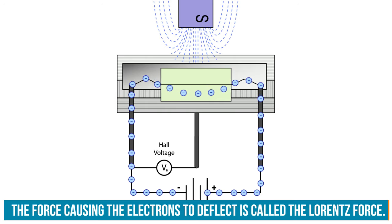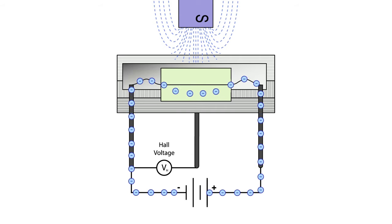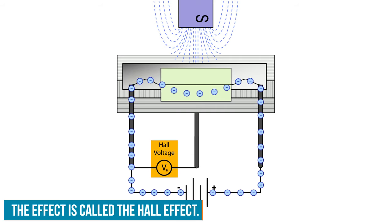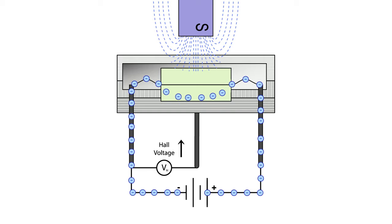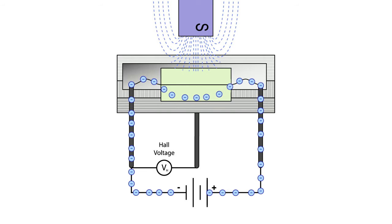One side of the sensor has more electrons than the other, creating a voltage potential difference across the sensor, known as the Hall voltage. The stronger the magnetic field, the more the electrons within the Hall effect sensor are deflected, and the greater the voltage potential created. This means that Hall effect sensors can not only detect if a magnetic field is present, but also to what degree.